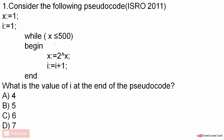In this question we have a pseudocode. We have initialized x equal to 1, i equal to 1, and there is a while loop. We have to find the value of i at the end of the pseudocode. The while loop runs while x is less than or equal to 500. We have two variables x and i: x is 2 to the power x, and i is i++.